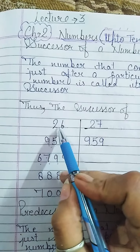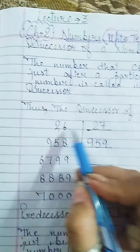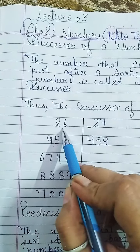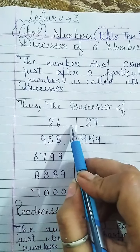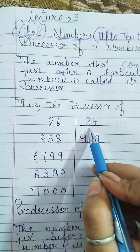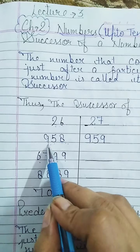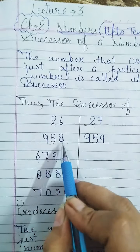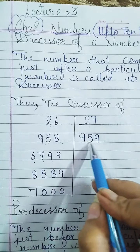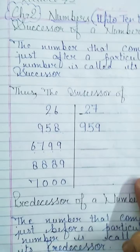For example, 26 plus 1 is 27. When we look at the next number after 26, we will see 27. So the successor of 958 — what comes after it? 959. So 959 is its successor.